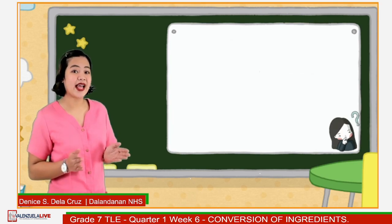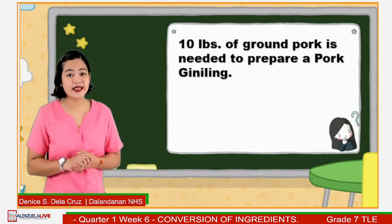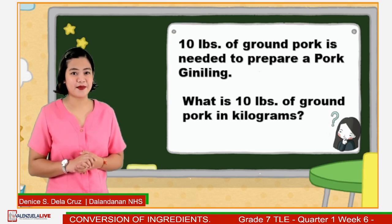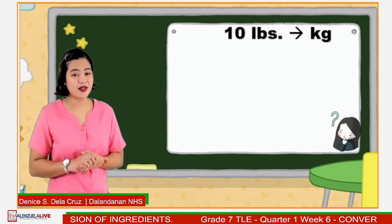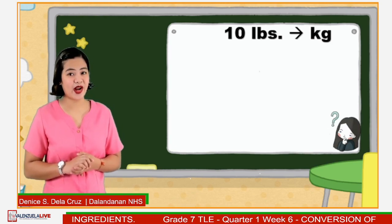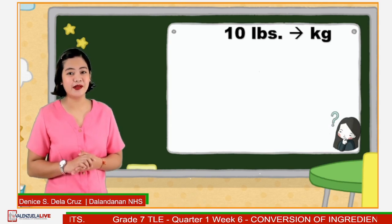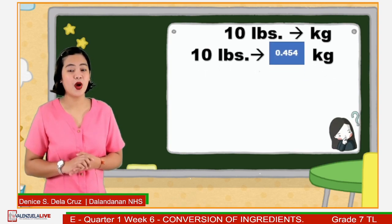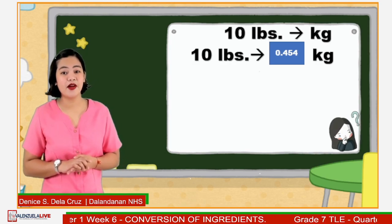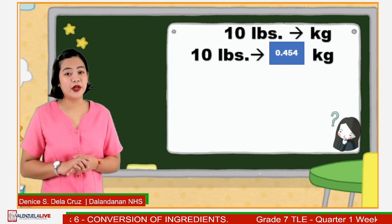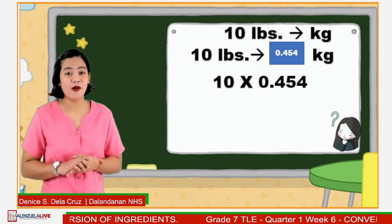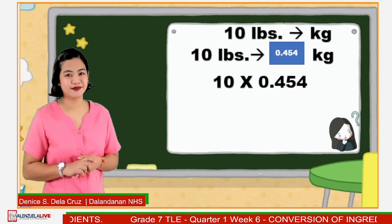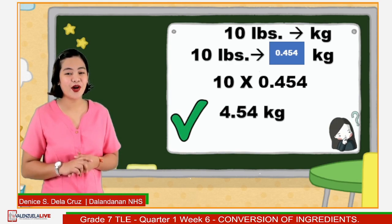Let us try to answer this. 10 pounds of ground pork is needed to prepare a pork dish. What is 10 pounds of ground pork in kilograms? According to our conversion table, one pound is equivalent to 0.454 kilograms. We are looking for the equivalent value of 10 pounds, so we multiply 10 by 0.454. Very good! The answer is 4.54 kilograms.